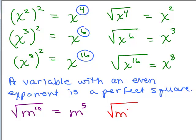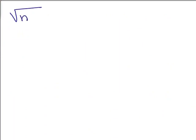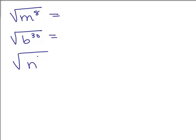The square root of m to the eighteenth: even exponent, so it's a perfect square — half the exponent gives m to the ninth. A few more problems: the square root of m to the eighth, the square root of b to the thirtieth, the square root of n to the sixteenth. They're all perfect squares because the exponents are even. Write the base with half the exponent: m to the fourth, b to the fifteenth, and n to the eighth.